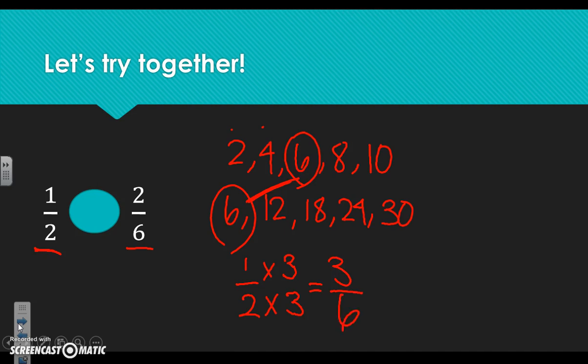One times three is three, and two times three is six. Now let's take a look at our second fraction, two over six. Lucky for us, six is the first multiple since it's just multiplied by one, so that one can stay the same. We now have three sixths and two sixths. We look at our numerators — three is a bigger number than two, so we can say one half is greater than two sixths.